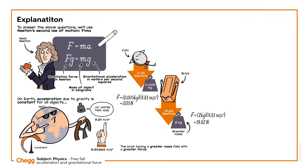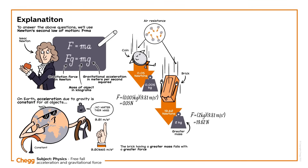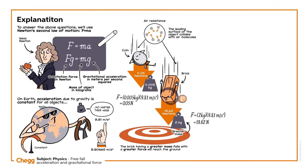As the objects fall through the air, they encounter air resistance, which opposes their motion. The leading surface of the object collides with air molecules. In the presence of air resistance, the net downward force on the brick, Fg, is greater than that of the coin. The greater force on the brick will cause it to accelerate faster than the coin through the air, and so it will reach the ground first.